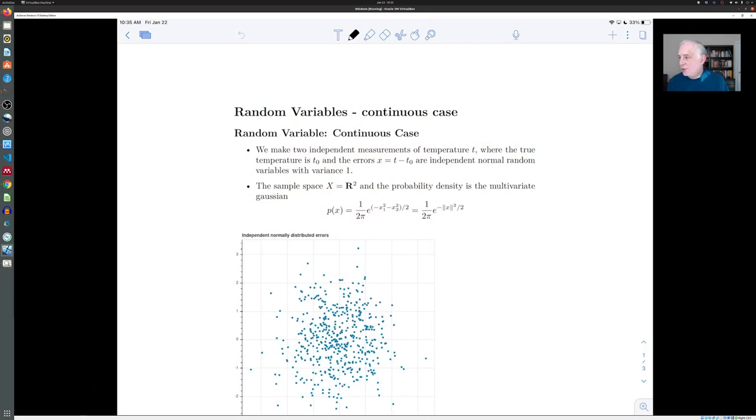We're going to think about the case where we're making independent measurements of a normally distributed random variable, and we want to draw some conclusions from that situation. So here's the story.